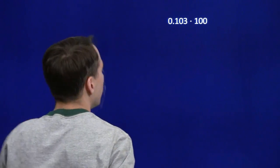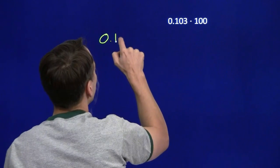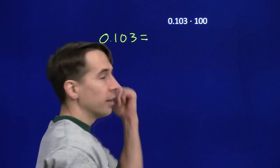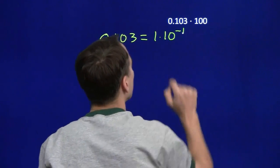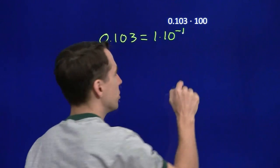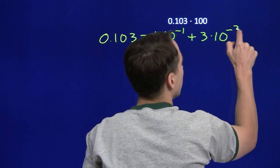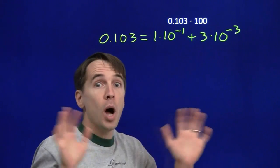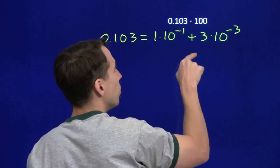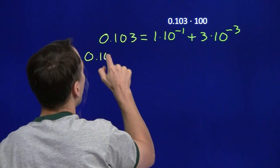Let's try another one. Here we're going to multiply by 100 instead of just 10. We look at the place values in our original number. We've got the 1 in the tenths place, so that's 1 times 10 to the minus 1. And then the 3 is out there in the thousandths place — that's 3 times 10 to the minus 3. There are no hundredths; that's what that 0 is telling us. So we've got 1 times 10 to the minus 1 plus 3 times 10 to the minus 3, and we're going to multiply that by 100.